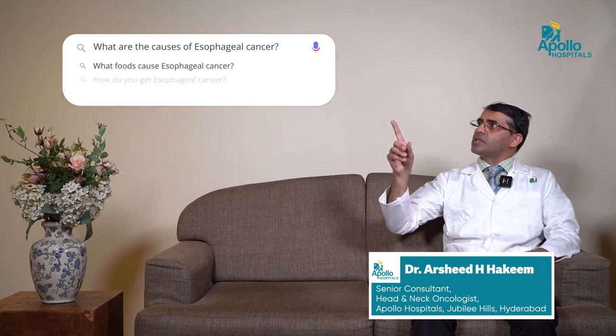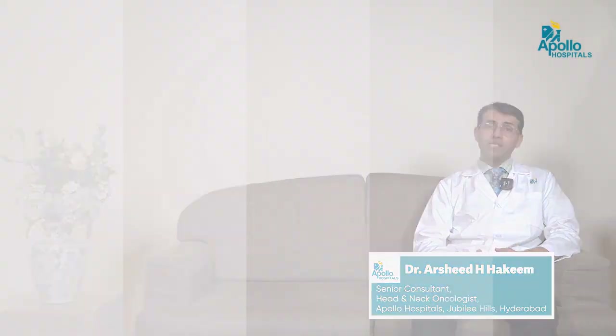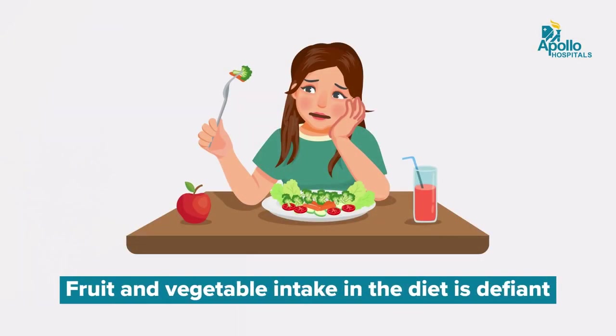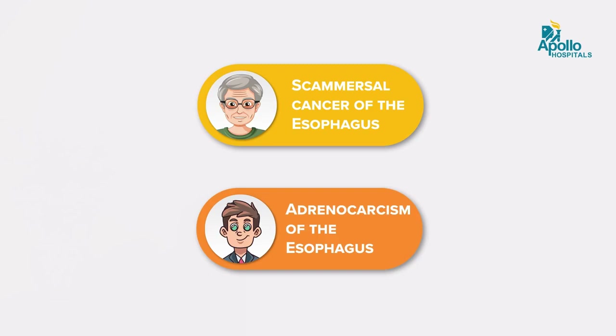What are the causes of esophageal cancer? The most common risk factor is smoking — people who are smokers are at very high risk. People whose diet is deficient in vegetables and fruits are also likely to get esophageal cancer. Elderly people above 60 are more likely to get squamous cell cancer of the esophagus, while people around 50 and above are more likely to get adenocarcinoma of the esophagus.